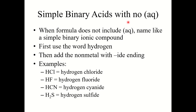Now, simple binary acids without AQ: if a formula does not contain (aq), you just want to name it like a simple binary ionic compound — first use the word hydrogen, then add the nonmetal with the -ide ending. So HCl is hydrogen chloride, HF is hydrogen fluoride, HCN is hydrogen cyanide, H2S is hydrogen sulfide.